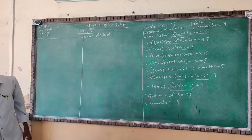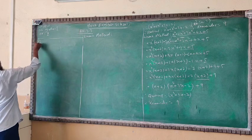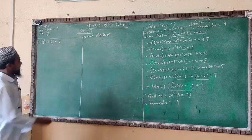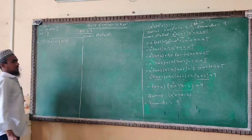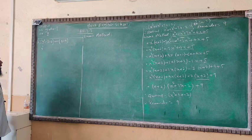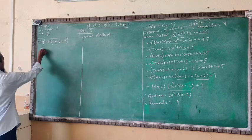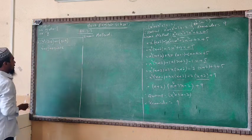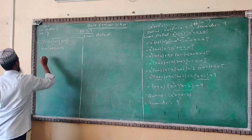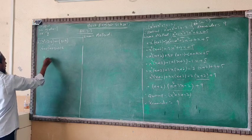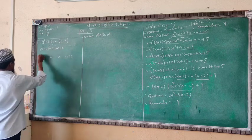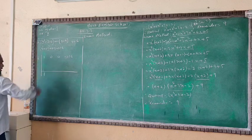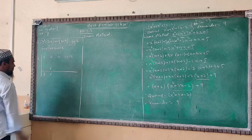Now question 3: y³ minus 216, divided by y minus 6. Here we have power 3 but we don't have powers 2 and 1, so we insert zeros. The full form is y³ plus 0y² plus 0y minus 216. The coefficient form is: 1, 0, 0, minus 216. The divisor y minus 6 gives us plus 6. Bring down 1; 1 times 6 is 6; 0 plus 6 gives 6.